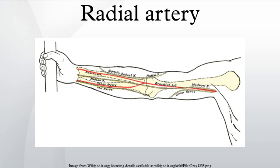In human anatomy, the radial artery is the main artery of the lateral aspect of the forearm. The radial artery arises from the bifurcation of the brachial artery in the cubital fossa.